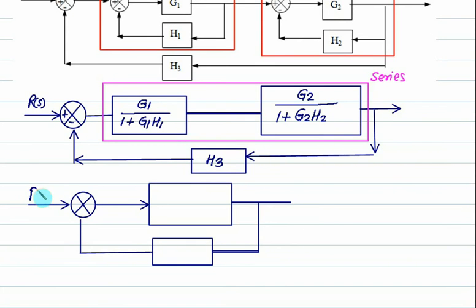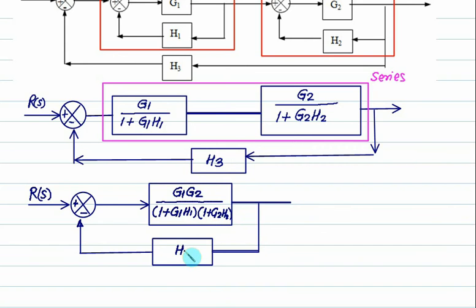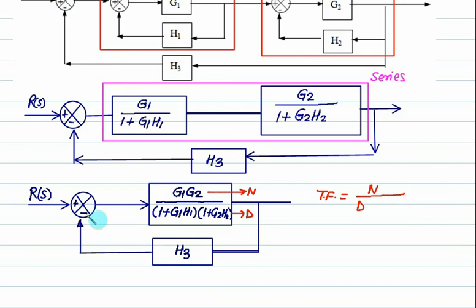So we have R of S, this one is minus. Product is G1·G2. This will be written in one bracket: 1 plus G1·H1. This will be written in second bracket: 1 plus G2·H2. And this feedback is H3. Is this a feedback operation? And is it in numerator by denominator form? So this is numerator and this one is denominator. The standard transfer function is written in the form of N by D, numerator upon denominator. Opposite sign of feedback is plus.